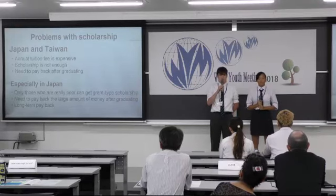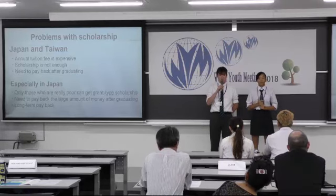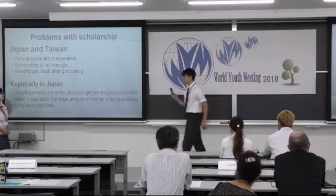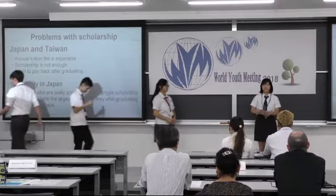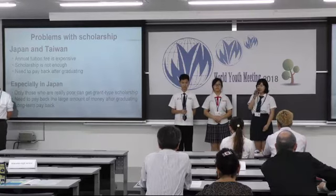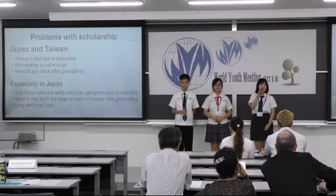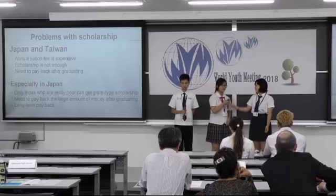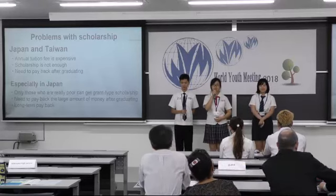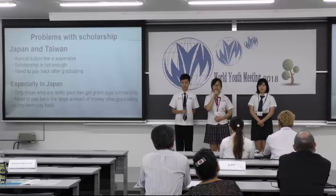If you apply for the loan-based scholarship, you have to pay back the money. To pay it back, you have to find a job and start working after graduating. But for some people, the money they must repay every month is stressful because they still have to earn a living. This is very problematic in Japan, where only those who are very poor can get the grant-type scholarship. Students with loan-based scholarships must pay back a large amount of money for 14 years after graduating. The current scholarship system in both countries is not good enough and falls short of achieving either equity or equality.